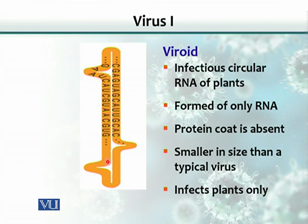As you can see here, some bases can form complementary base pairing, while in other regions there is no base pairing. Where bases are complementary to each other, pairing occurs. So this is the typical structure of a viroid.